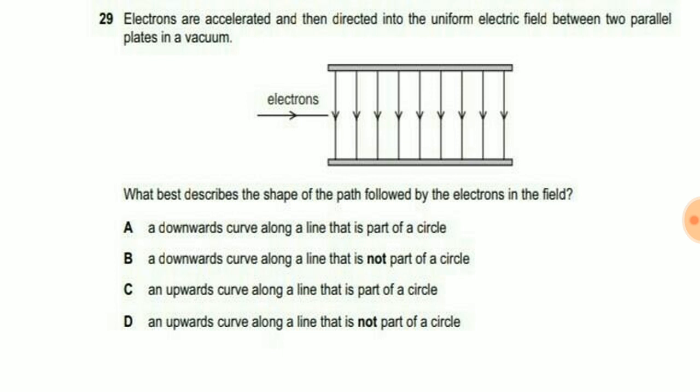Electrons are accelerated and then directed into the uniform electric field between two plates in vacuum. See, this arrow is showing electrons and these two plates are there, and the direction of the electric field is shown by the arrow.